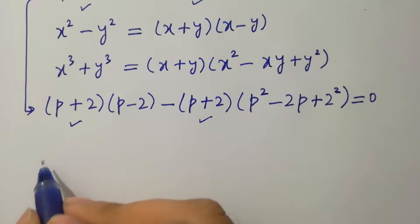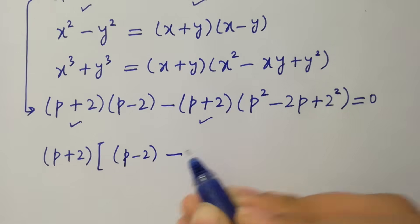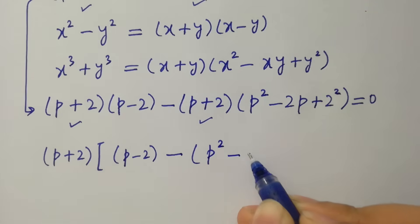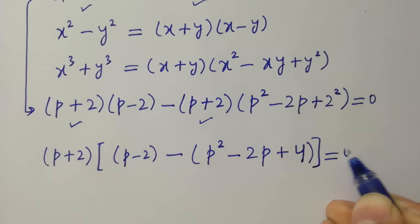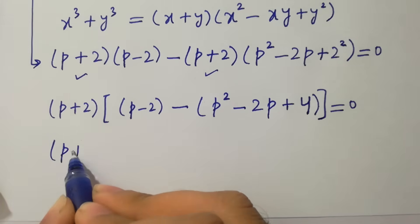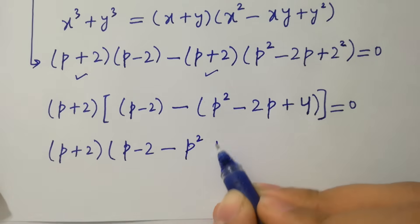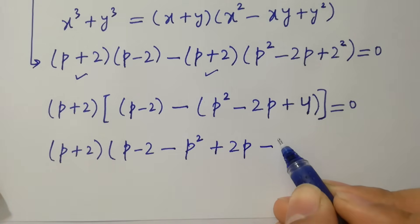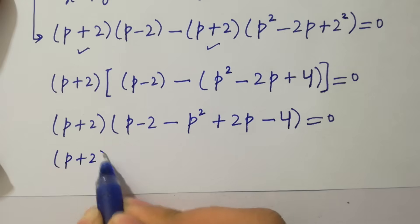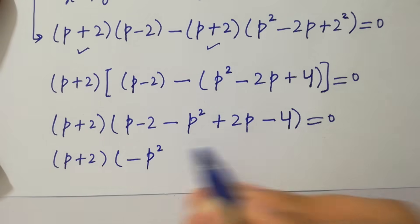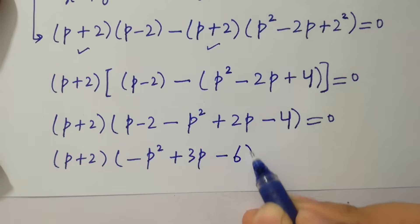Factoring out the common factor (p plus 2), we get: (p plus 2) times [(p minus 2) minus (p squared minus 2p plus 4)] equals zero. Expanding inside the bracket: p minus 2 minus p squared plus 2p minus 4, which simplifies to: minus p squared plus 3p minus 6.